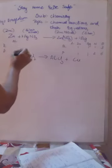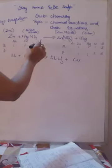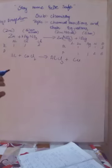Now let us identify the atoms. The elements present are aluminum, copper (Cu), and chlorine (Cl). On the reactant side: one atom of aluminum, one atom of copper, and two atoms of chlorine. On the product side: one atom of aluminum, three atoms of chlorine, and one atom of copper. We need to balance chlorine.